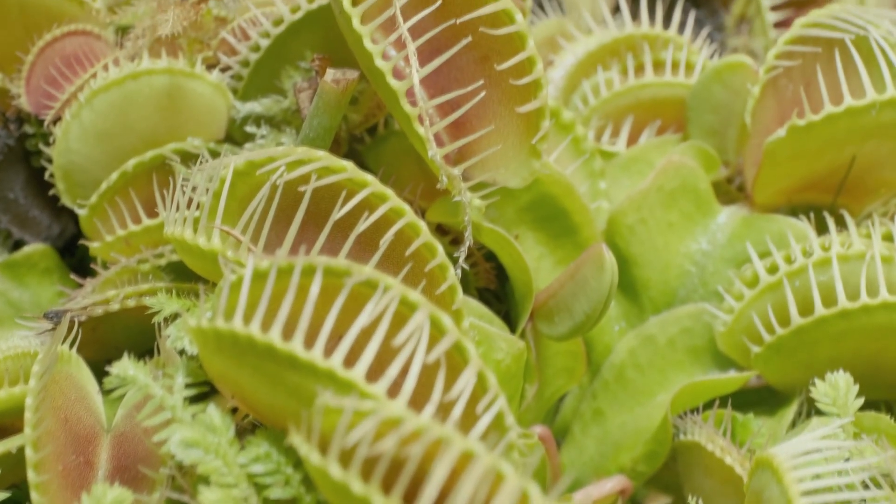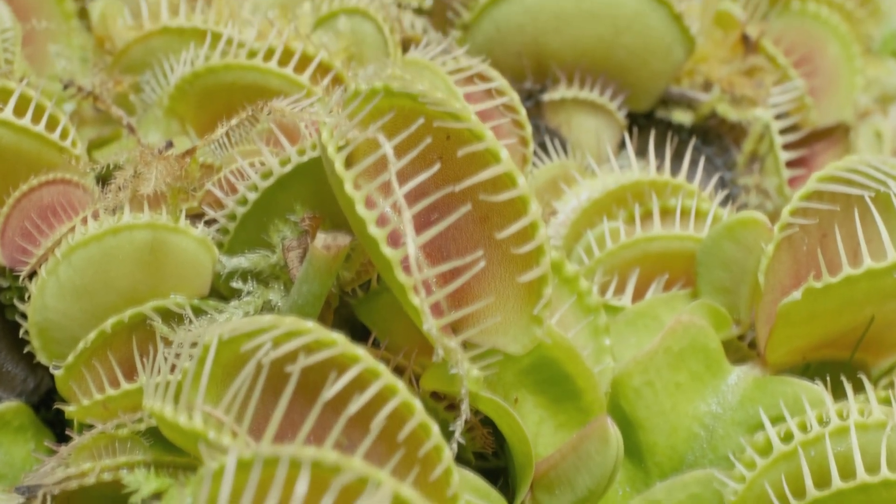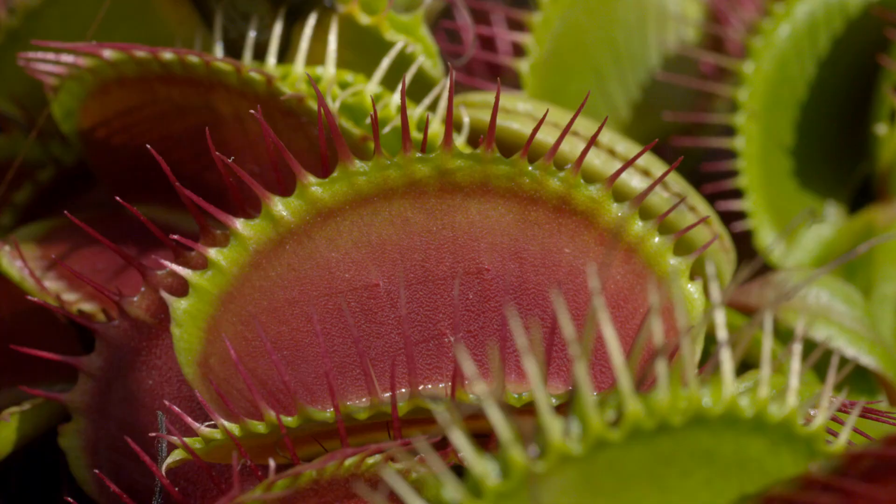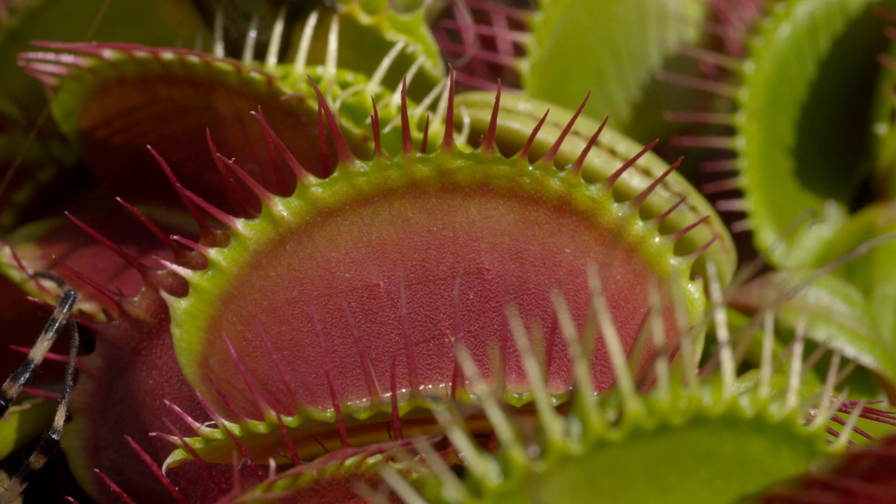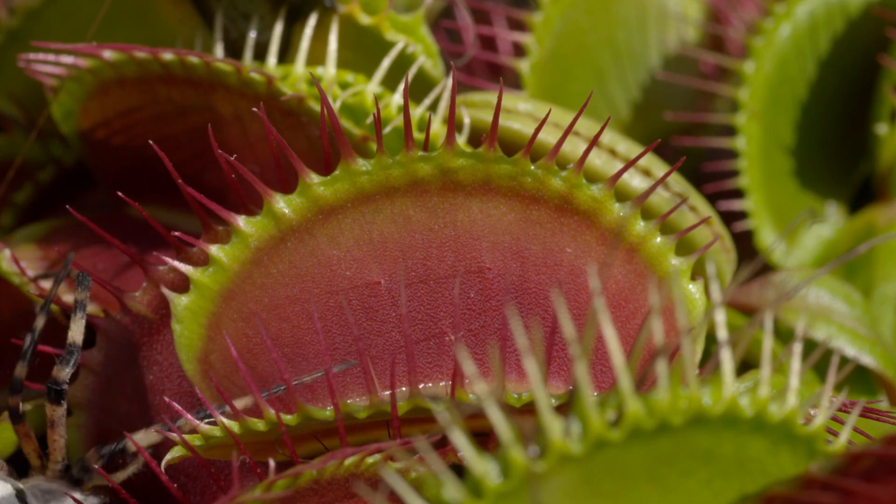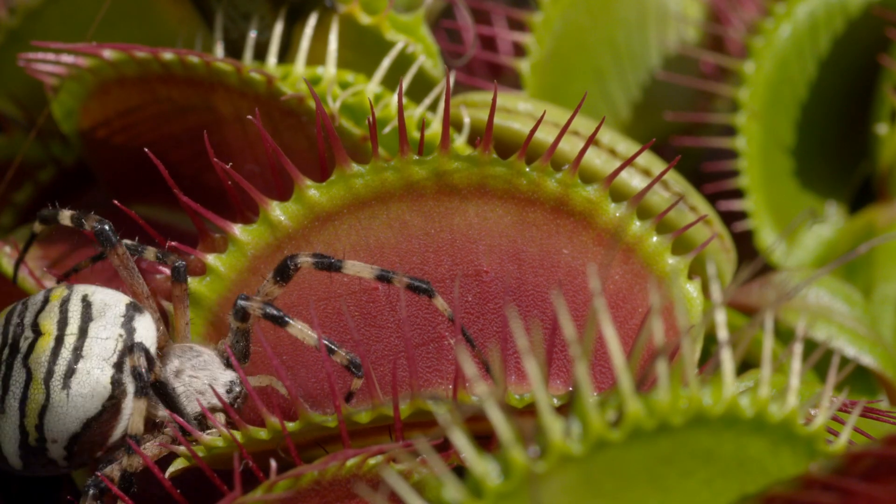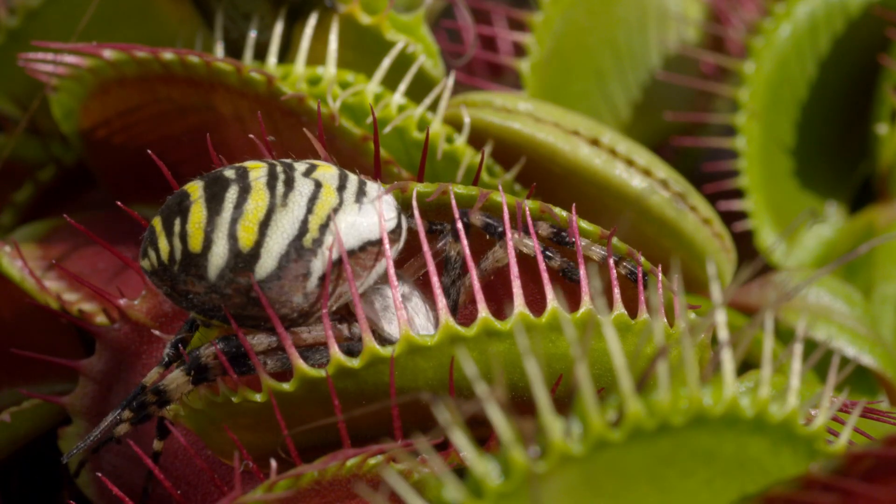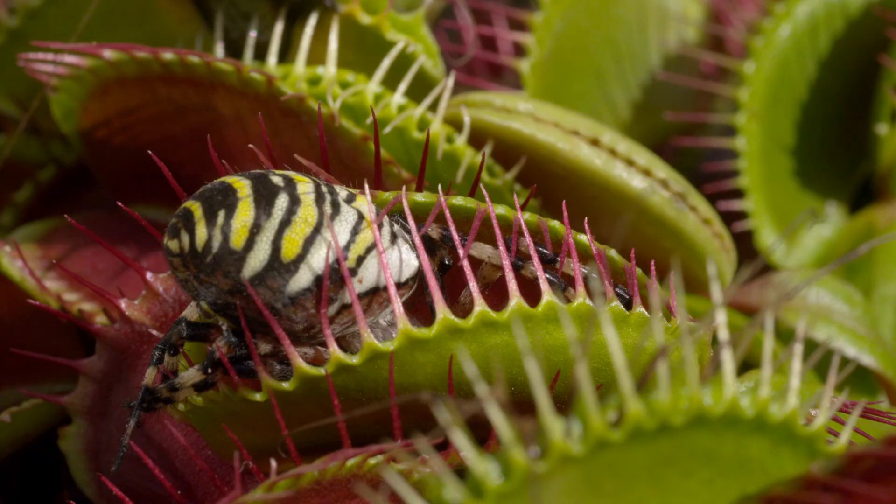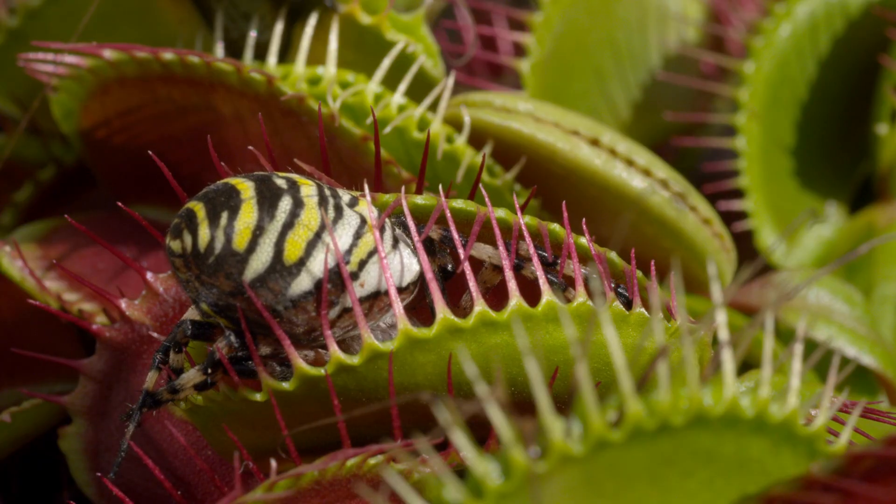It sits there, still and silent, two green lobes waiting like open hands. But beneath that stillness, the Venus flytrap is counting. Touch one of its hairs once, and nothing happens. Touch it twice within 20 seconds, and the trap snaps shut like an ambush. That means the plant remembers. It processes time. It makes a decision.